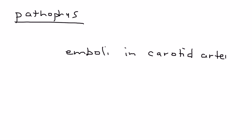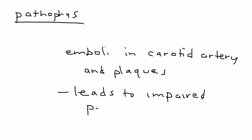Very briefly on the pathophysiology of a TIA. Essentially what you have is this scenario in which you have an emboli in one of the carotid arteries, and this combined with perhaps existing stenosis and plaques leads to impaired perfusion of the brain. That's the hallmark pathophysiology of a TIA.